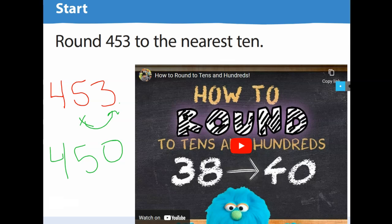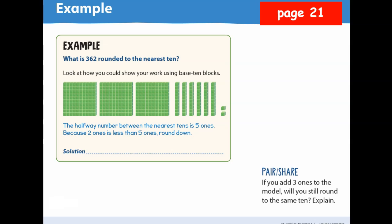So let's watch the video there and focus. Look on page 21. It says, what is 362 rounded to the nearest ten? It says look at how you could show your work using base-ten blocks. So how many hundreds do I have? Three. How many tens? Six. The six is in the tens place and I have one, two, three, four, five, six. We are on page 21.